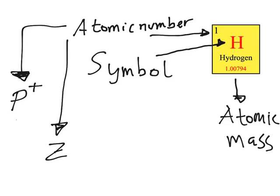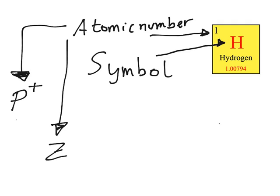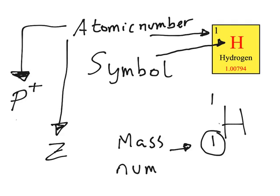For nuclear notation, there is something called the mass number — it is not the same as the atomic mass. The mass number is the sum of the protons and the neutrons of that element. The atomic mass has decimals, but the mass number cannot — you can't have half a neutron or a quarter of a neutron. So the mass number of hydrogen is one, meaning the sum of protons and neutrons equals one. Since hydrogen has no neutrons, only one proton contributes to the mass number. This mass number is what we use in nuclear notation, not the atomic mass.